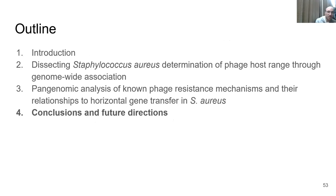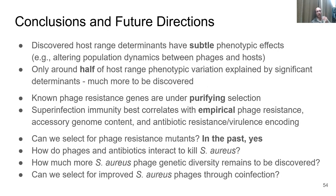Moving to the final conclusions and future directions: in the first study, I found host range determinants with subtle phenotypic effects such as altering population dynamics between phages and hosts, not preventing infection but helping hosts out-compete phages. Only around half the host range phenotypic variation could be explained by significant determinants, so there's a lot more to discover. Known phage resistance genes appear to be under purifying selection, especially the core genes. Superinfection immunity best correlates with empirical phage resistance, accessory genome content, and antibiotic resistance and virulence gene coding.